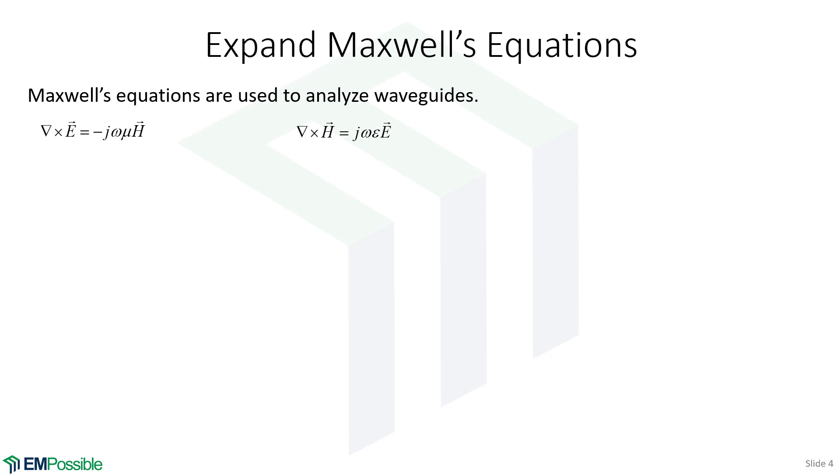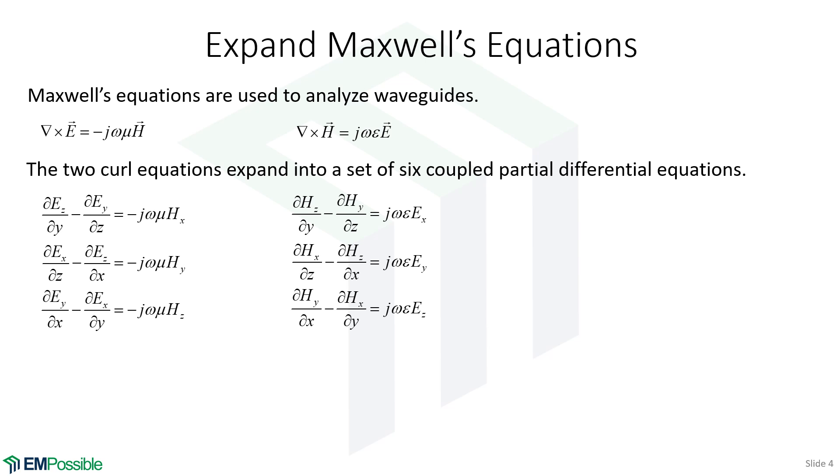Let's examine what would happen with Maxwell's equations, if we know the form of the solution for a waveguide. So let's have the curl equations, we start there. Each one of these is a vector equation that can each expand into a set of three scalar equations. So in total, we have six coupled partial differential equations.